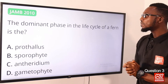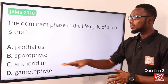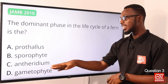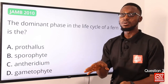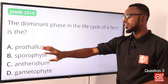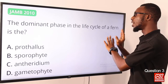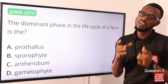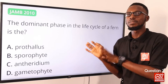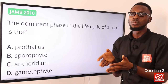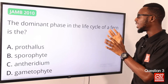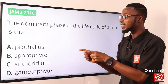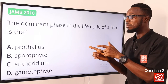Question 3: The dominant phase in the life cycle of a fern is the adult sporophyte. We also have the sexual phase, which is the gametophyte, with the antheridium for sperm and the archegonium for the egg, located on the prothallus. When we talk about a fern, we are looking at the phylum Pteridophyta — land plants with roots, rhizomes, and fronds. They are spore-bearing and non-flowering plants. So the correct option is option B, the adult sporophyte.